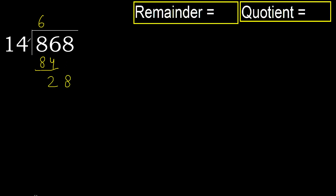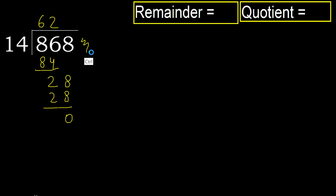14 multiplied by 3 is greater, so multiplied by 2: 28 is not greater. 28 minus 28 is 0. Next, there is no number, therefore finish.